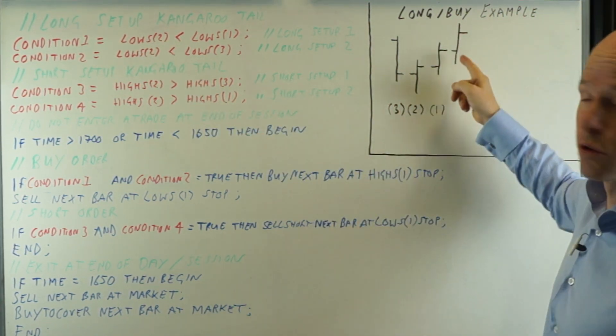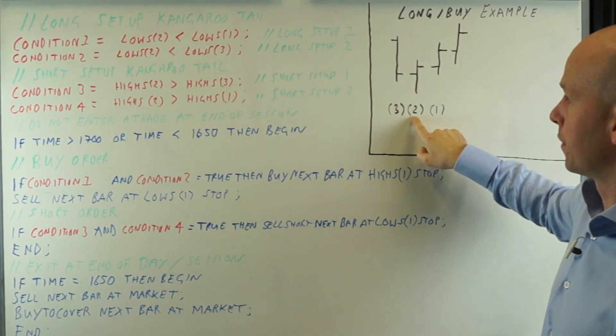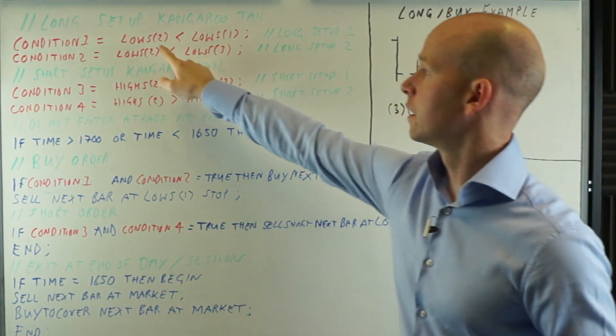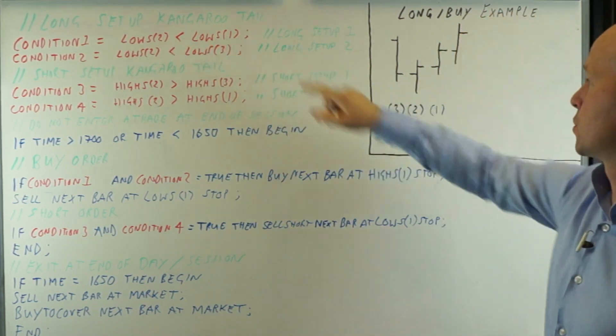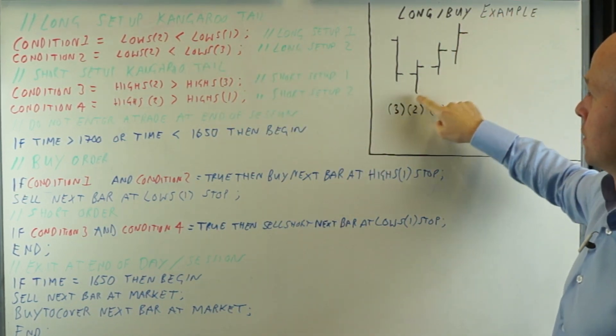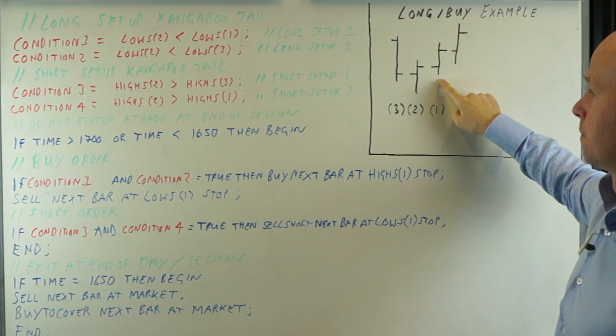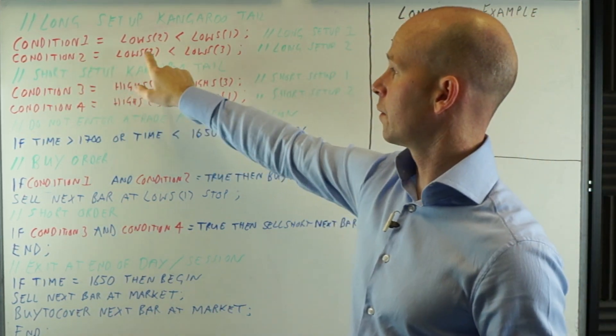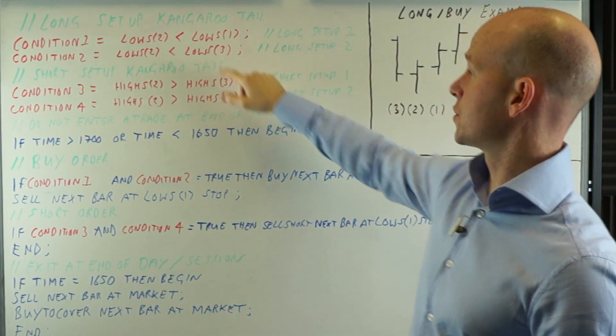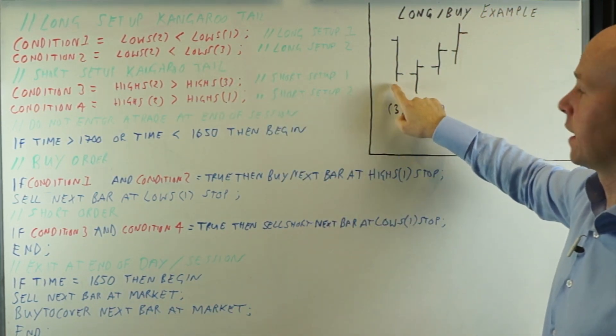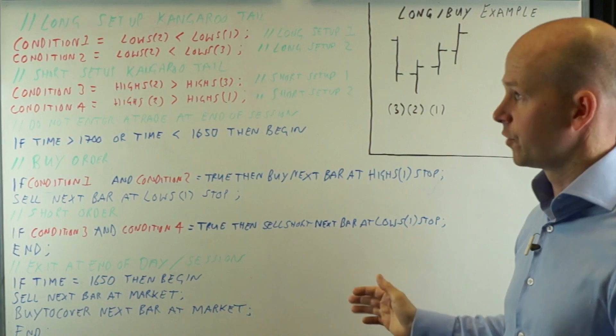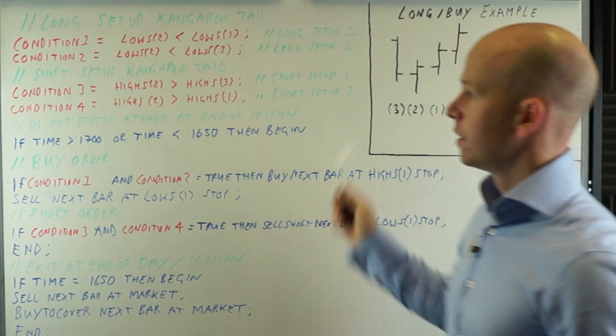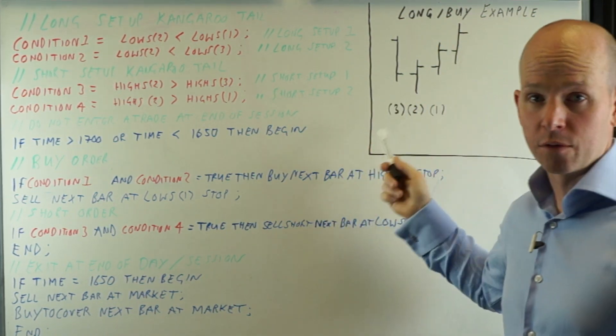So that low has to be less than that low. That's our condition one. Condition two, lowS2 has to be lower than lowS3. So that low has to be less than that low. That simple. Really easy. That's for the buy setup or the long setup.